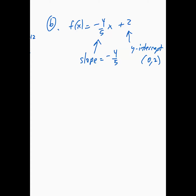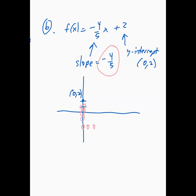Start with the y-intercept at 0 comma 2, then follow the slope: negative 4 over 5 means go down 4 and over 5 to the right, landing at the point x equals 5, y equals negative 2. Draw a line through those two points. Sorry for making it a bit crooked — and that problem is done.